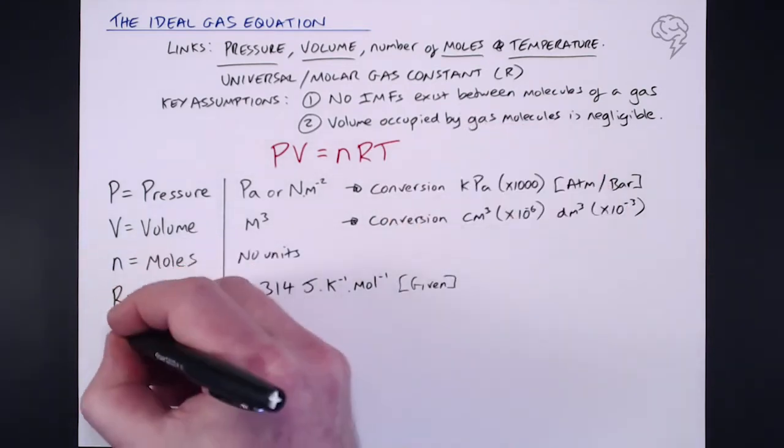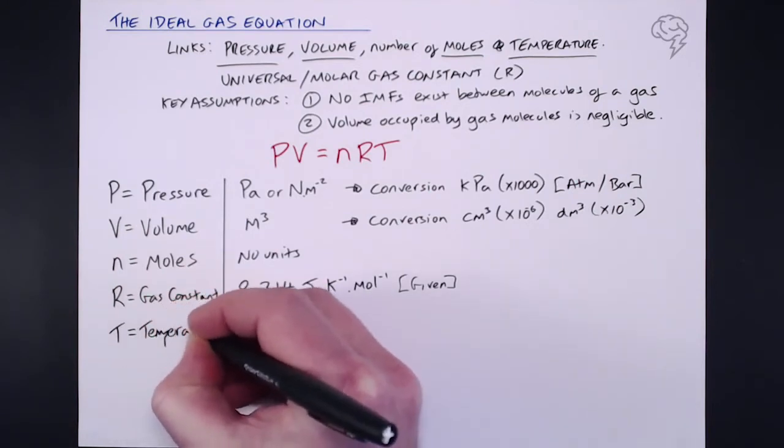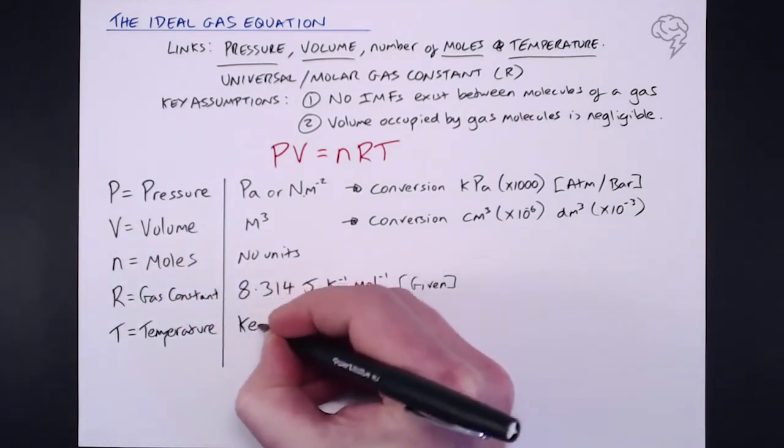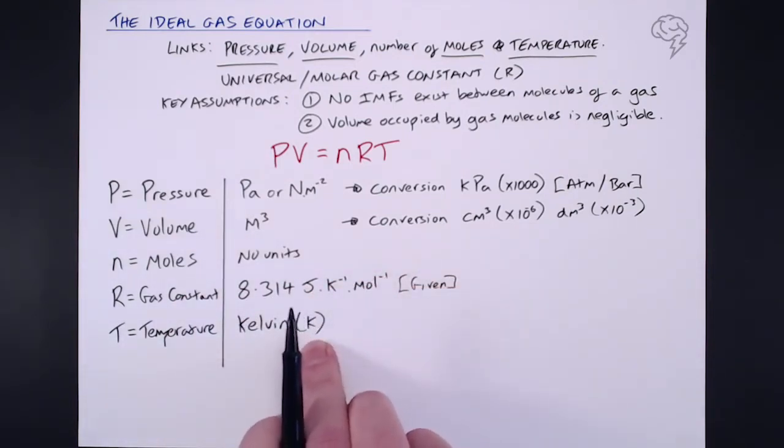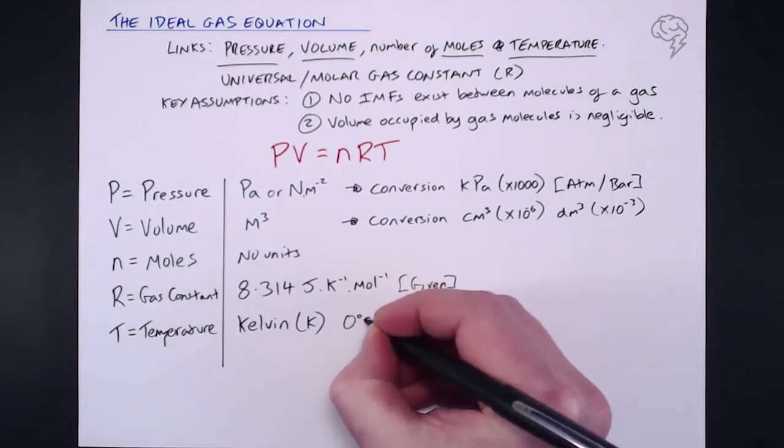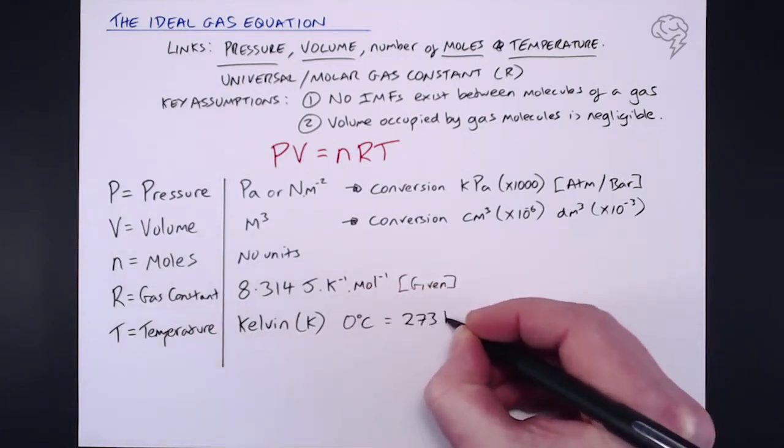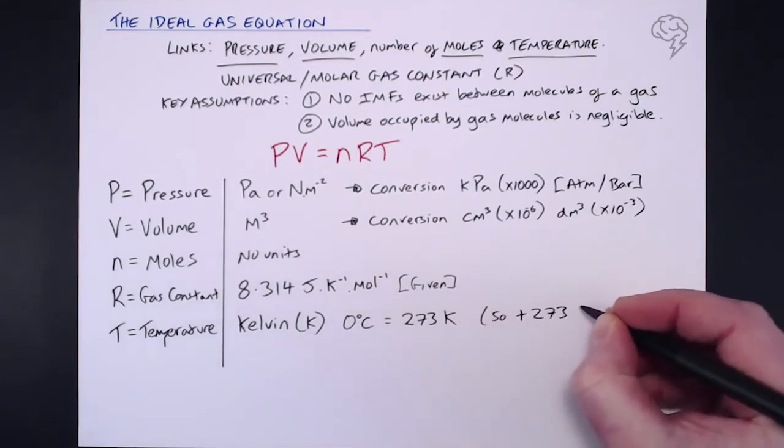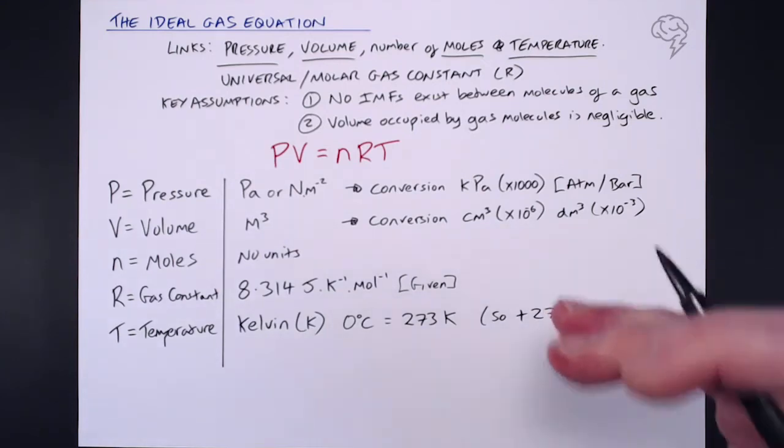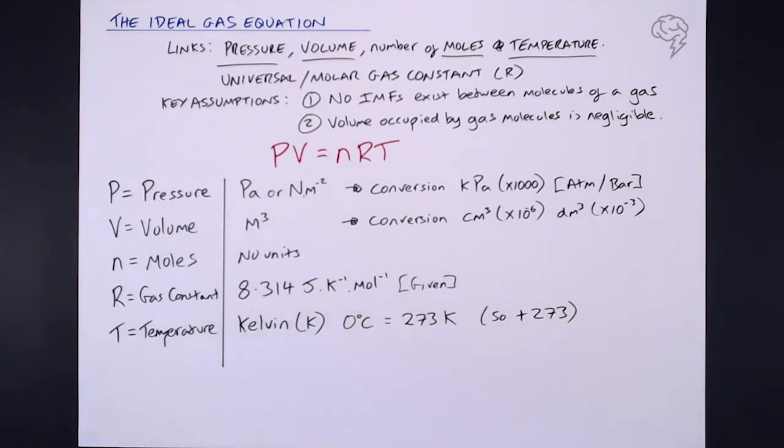And last but not least, we've got temperature. Now temperature must be in kelvin, because this is what our universal gas constant is in. Basically zero degrees Celsius equals 273 kelvin. So at zero degrees, that's the temperature in kelvin. So basically, if you are given the temperature in degrees Celsius, what you need to do is take that temperature in degrees Celsius and add 273 to it to turn it into kelvin. So even if it's negative numbers in degrees Celsius, you add 273 and that will give you your temperature in kelvin.